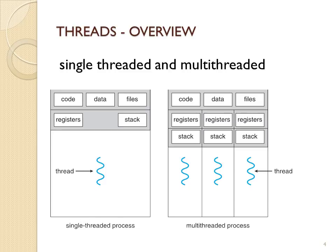Most modern operating systems and applications are multithreaded. For example, if you have your word processor, you could have one thread doing a spell check, another thread reading from the keyboard, another thread getting an image and putting it onto the document. If one thread is loading an image and that takes some time, you can still continue typing and editing, because the entire process doesn't have to block — just the one thread has to block to finish its task.